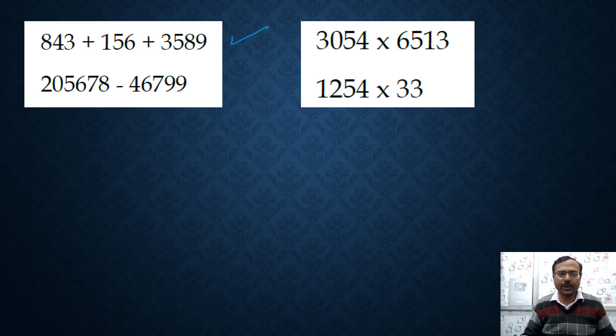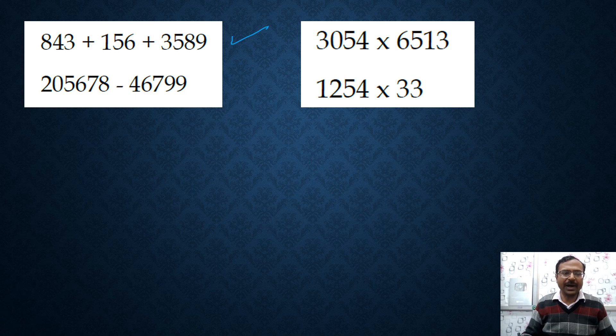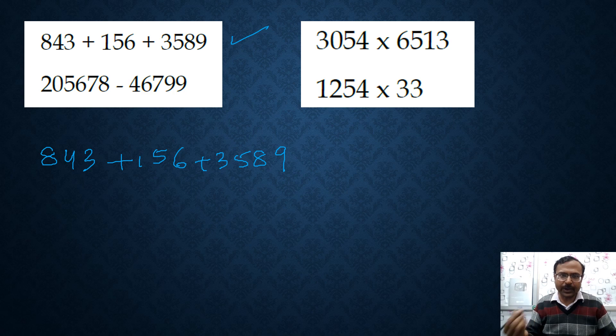The first question which I am going to take up is a question of addition. And if you have to estimate this 843 plus 156 plus 3589, you can be as accurate as you want to be. If you can round this off to nearest 100, it will give you a rough idea of the estimate. But if you round it off to nearest 10, that will be far more accurate.